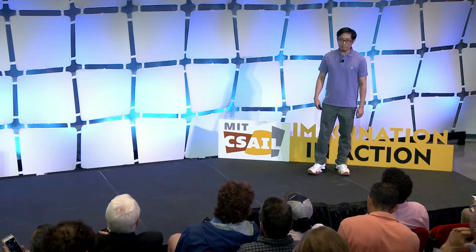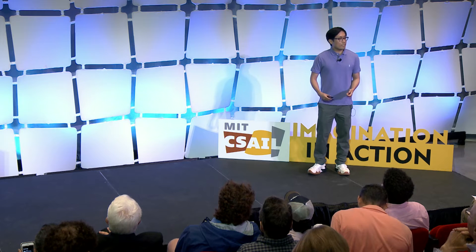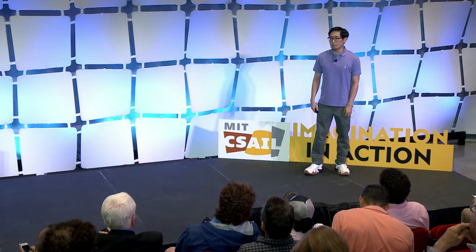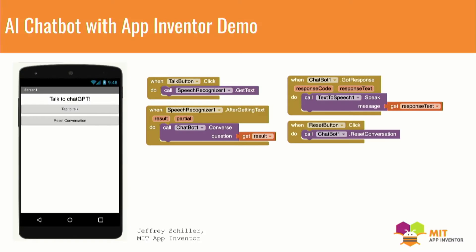In this talk, I want to introduce a few lines of projects the App Inventor is conducting around generative AI. The first example is we are integrating large language models into App Inventor, making it simple and possible for people to create apps that harness the power of these large language models.